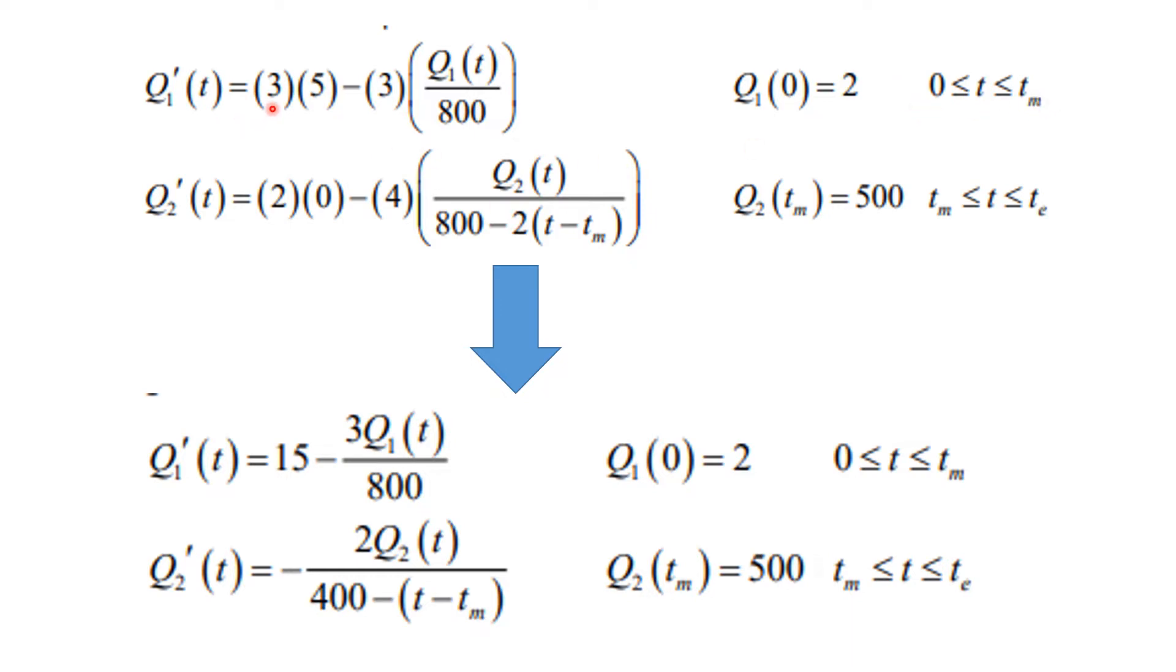what happens is we're running in three gallons per hour of very bad stuff, and we're running out the same three. So the amount of stuff in the tank remains at 800 because this flow rate is the same as that flow rate. And this is the concentration, that concentration is known to be five, and this is the concentration of the well-mixed solution in 800 gallons. And your initial condition was you had two ounces of the stuff to start with.